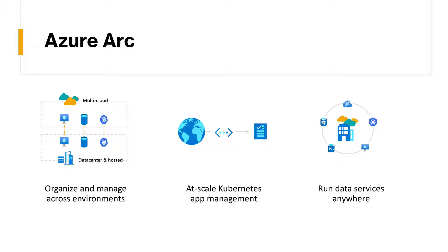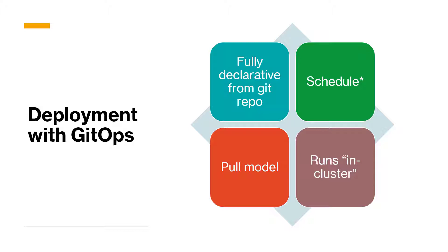That's one thing Azure Arc does in a nutshell. A second thing — and the one we are concerned about in this video — is at-scale Kubernetes app management: deploying software across multiple Arc-enabled Kubernetes clusters, in this case using GitOps. A third aspect of Azure Arc is data services: the ability to run Azure SQL or Postgres outside the Azure data center, as long as it's running on Kubernetes. The focus of this video is demonstrating how GitOps works on an Azure Arc enabled cluster.